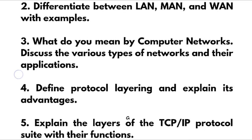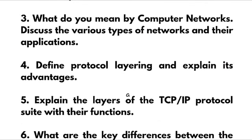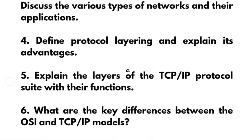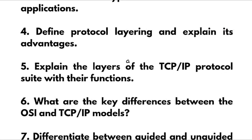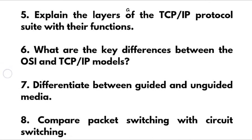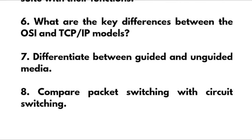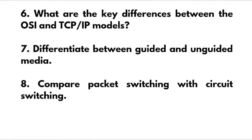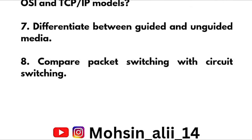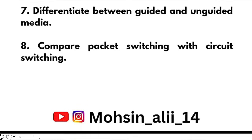This is the passing module where you can easily grab more than 15 marks. Define protocol layering and explain its advantages; explain the layers of the TCP/IP protocol suite with their functions; what are the key differences between the OSI and TCP/IP models — or simply they may ask you to briefly explain the OSI model. Next, differentiate between guided and unguided media, and compare packet switching with circuit switching. That is all about Module 1.